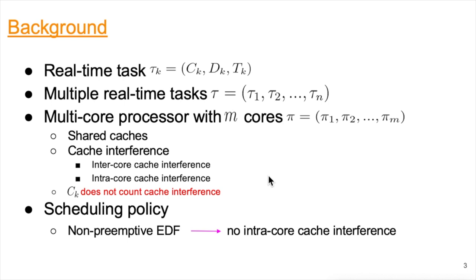Let's start with the background. A real-time task is a sequence of jobs. A real-time task tau_k is characterized by three parameters: worst-case execution time c_k, relative deadline d_k, and period t_k. We consider a real-time task set tau composed of multiple real-time tasks, each represented by tau_i. Our system architecture consists of multi-core processors with m cores, each core represented by pi_i. In multi-core processors, caches are organized in a hierarchy. Lower-level caches, such as L1 and L2, are private to cores, while last-level caches are usually shared among all cores.